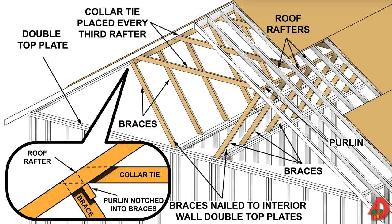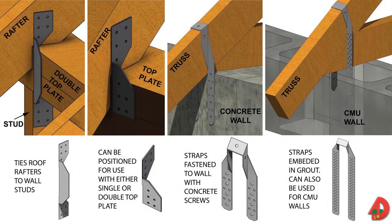Purlins support long rafters and are horizontal members placed beneath and perpendicular to the rafters at an intermediate point between the ridge and exterior wall. Purlins are supported by braces that extend to the nearest exterior partition. Extreme weather conditions such as hurricanes and tornadoes may generate enough force to significantly damage a roof. Metal connectors such as rafter and truss anchors are vital in connecting the wall frame to the roof rafters or trusses. Truss anchors are embedded in grout in the lintel course of a CMU wall, fastened to a CMU or concrete wall with screws, or fastened to a wood-framed wall with nails.